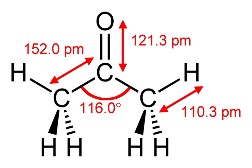It can then be metabolized via methylglyoxal to D-lactate and pyruvate, and ultimately glucose and energy, or by a different pathway via propylene glycol to pyruvate, lactate, acetate, usable for energy, and propionaldehyde.